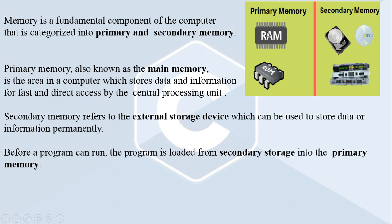Primary memories include RAM and ROM. Secondary memory is usually larger in size and can store large amounts of data for a long period of time — that means it stores data permanently. Examples of secondary memory include hard disk, DVD, pen drive, and floppy disk. Secondary memory refers to external storage devices which can be used to store data or information permanently.